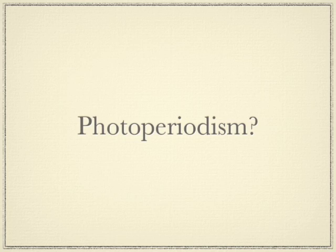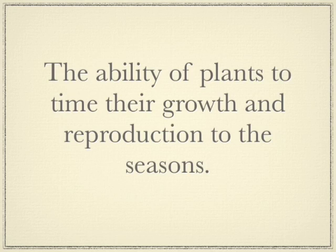Today we're going to look at photoperiodism. Photoperiodism is the ability of plants to time their growth and reproduction to the seasons. Their reproduction mainly refers to the growth of flowers, and when their flowers are fertilised into fruit. Other seasonal activity includes growing in spring and summer, and in winter they tend to drop their leaves.